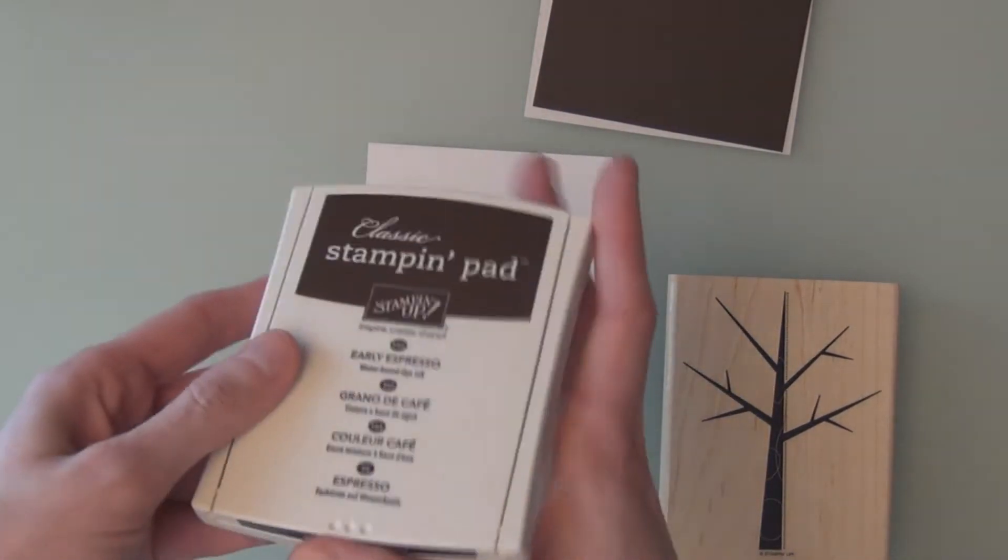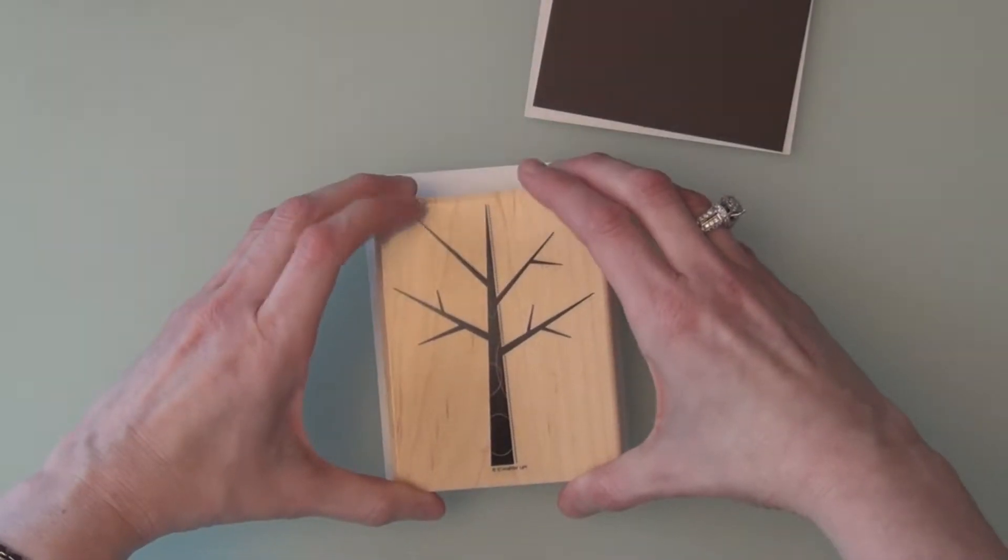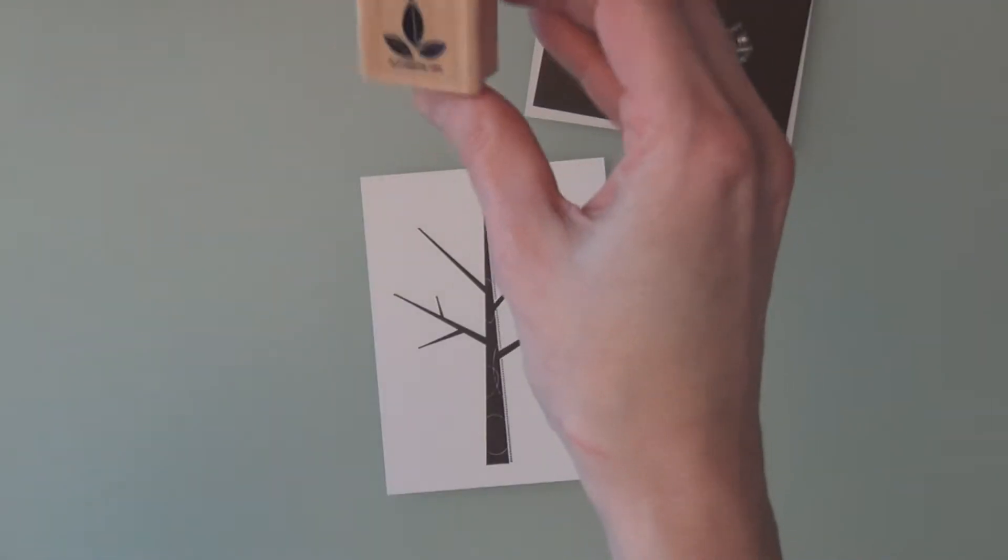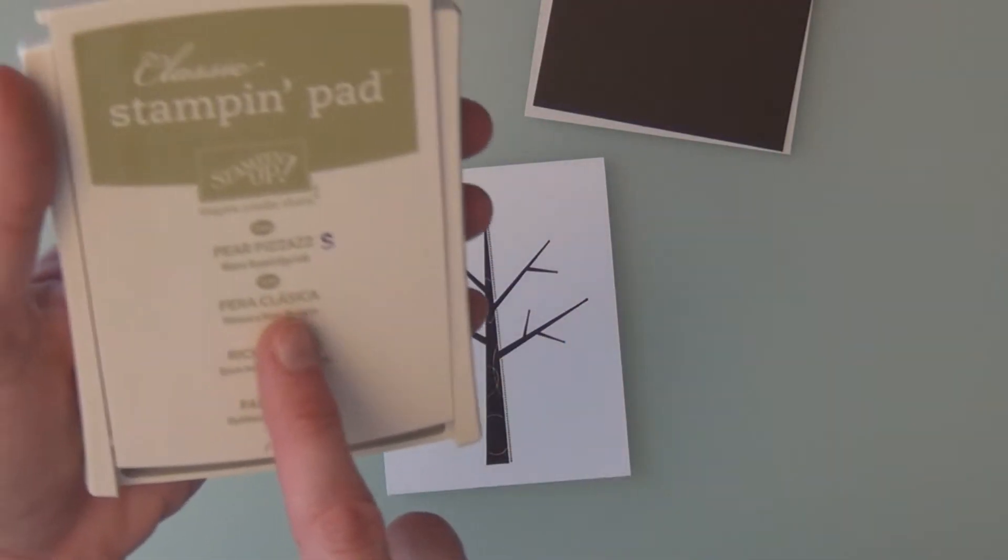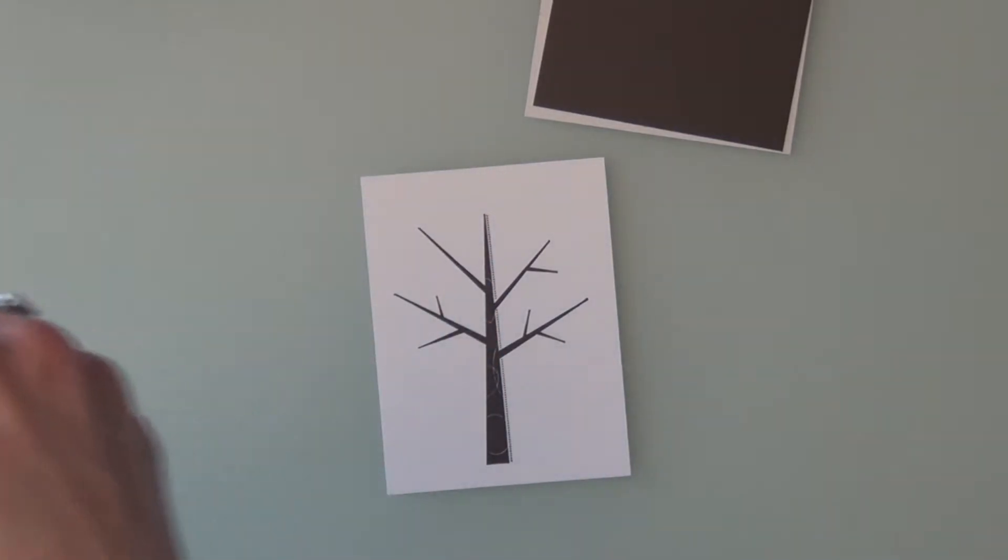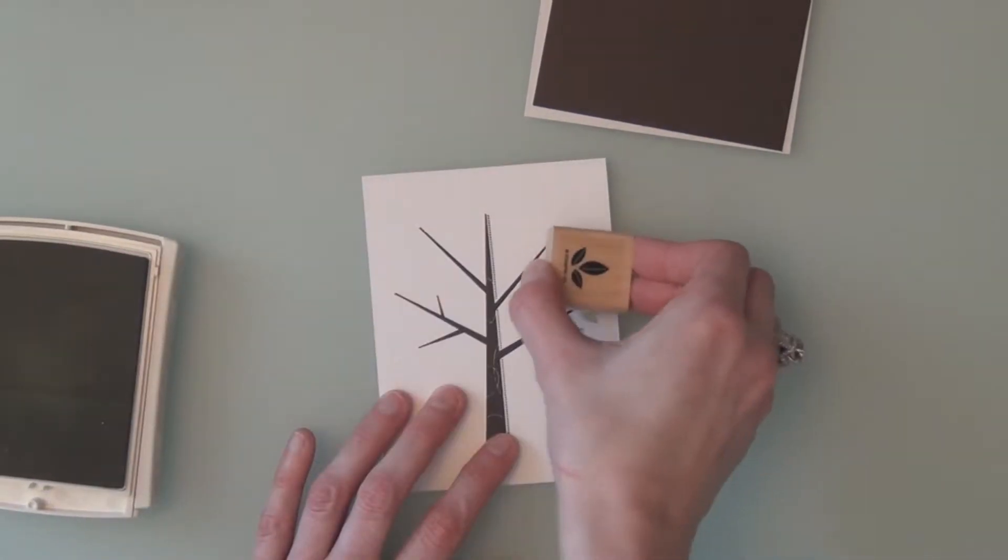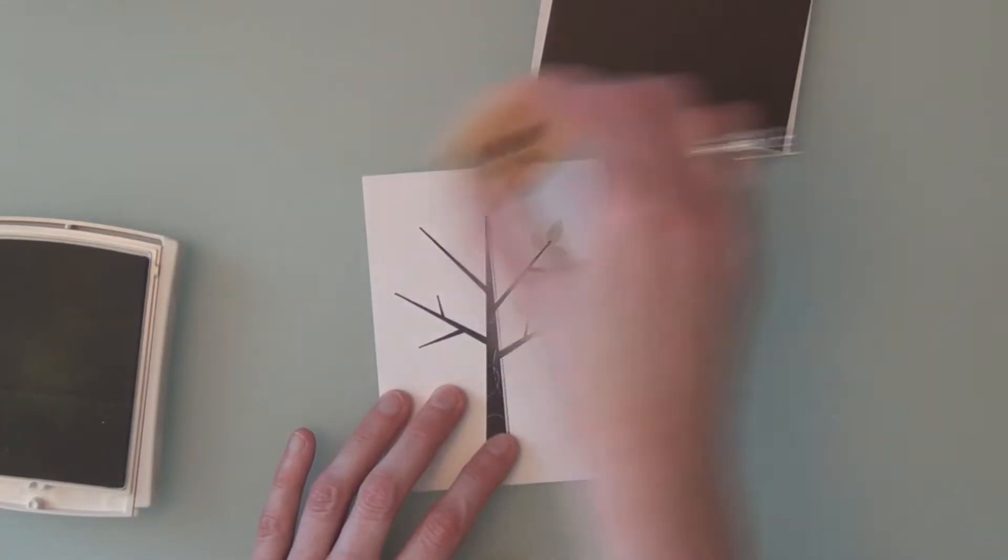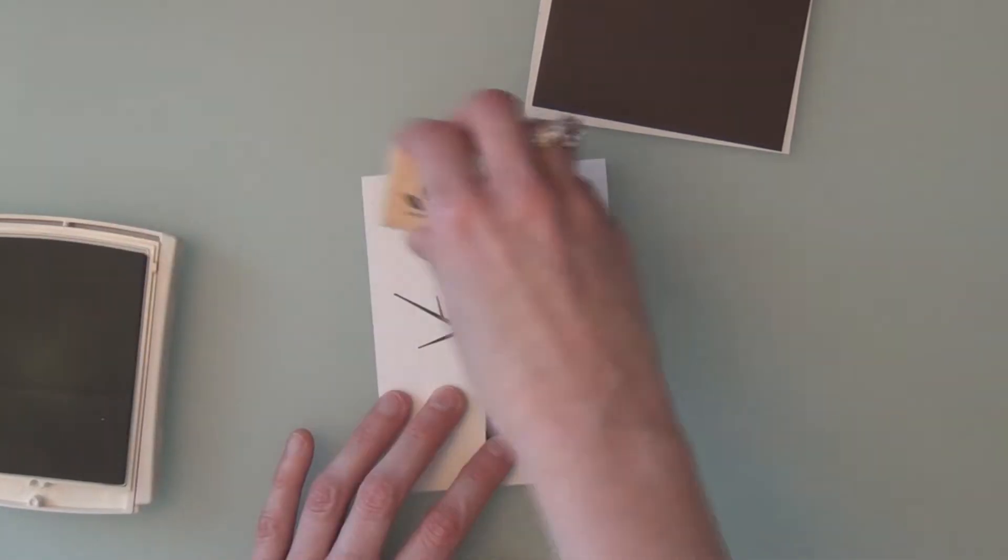So this is the Hurry card. I'm going to take Early Espresso and stamp my tree. I am then going to take the little leaves stamp. I'm going to stamp that in Pear Pizzazz. Not using a Stampin' Majig. I'm just going at it wherever the leaves land is where they will be. This is the card in a hurry.